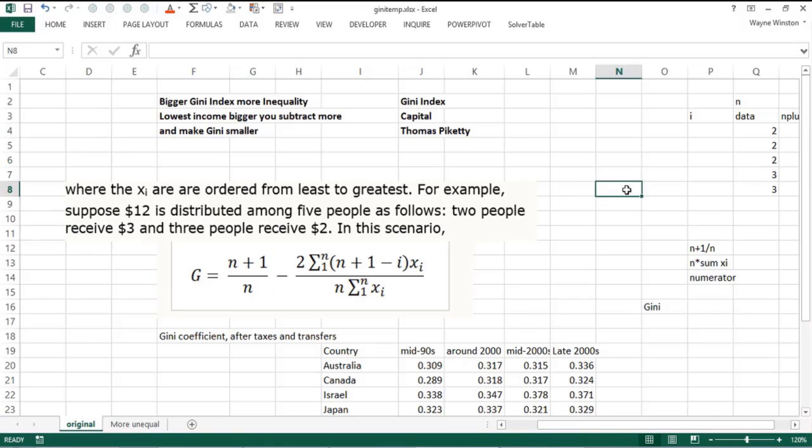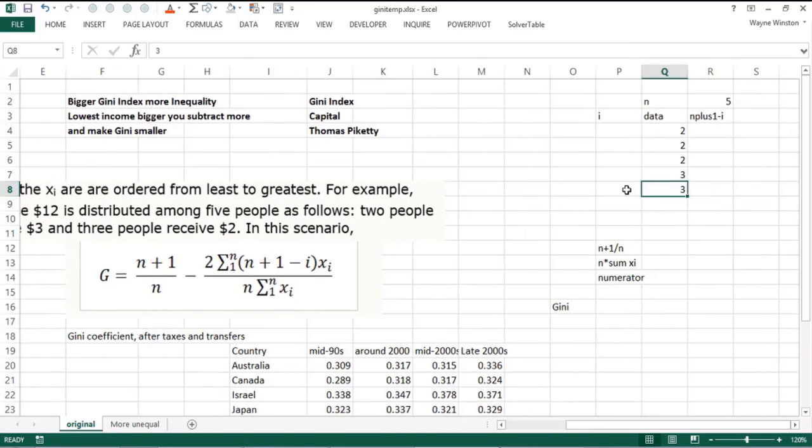If there's five people, to take a very simple example where there's not much income inequality, three people make two units of income, two people make three units of income. That's a pretty equal income distribution. The Gini index—the larger the Gini index, the more inequality. If we look at this formula, how would more inequality come up with a larger Gini index?